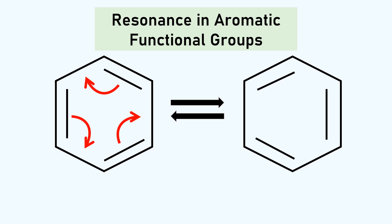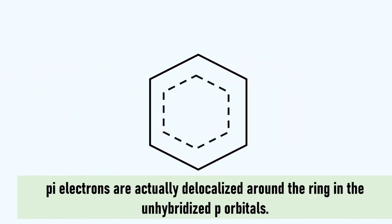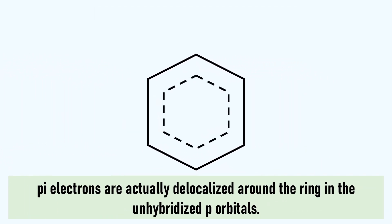Of course, the actual structure is a hybrid of the two. Here is the resonance hybrid. The pi electrons are actually delocalized around the ring in the unhybridized p orbitals.